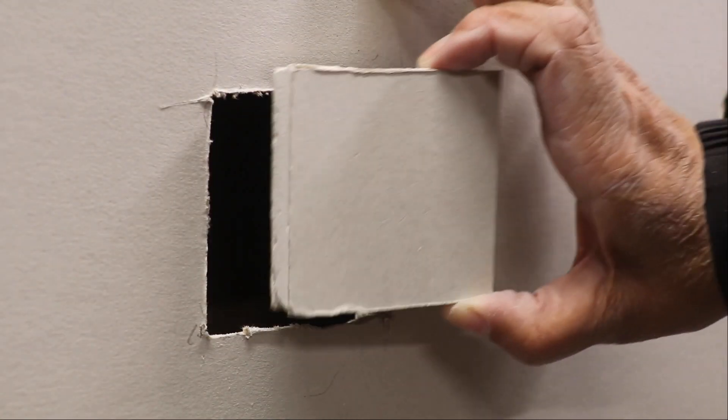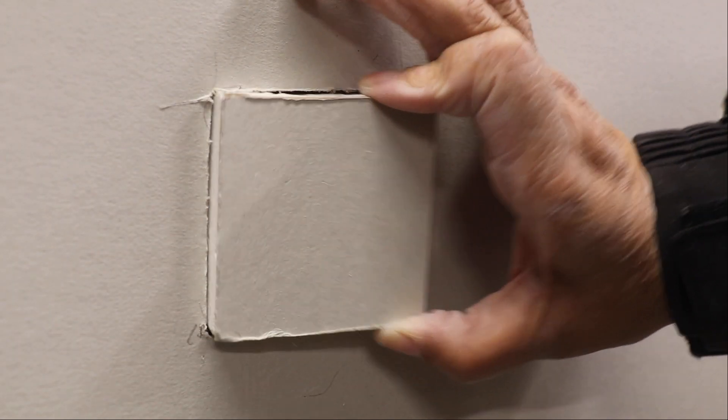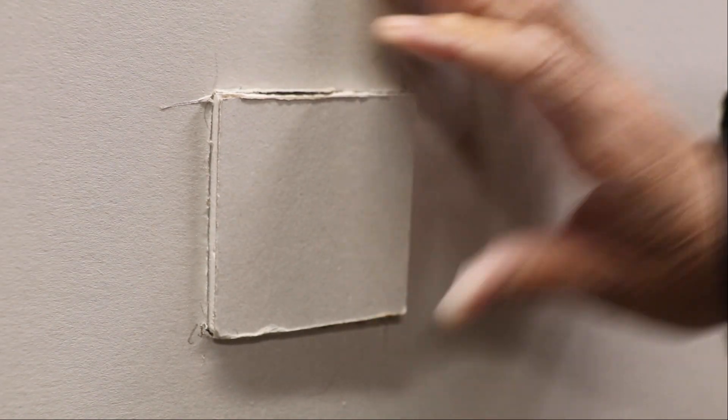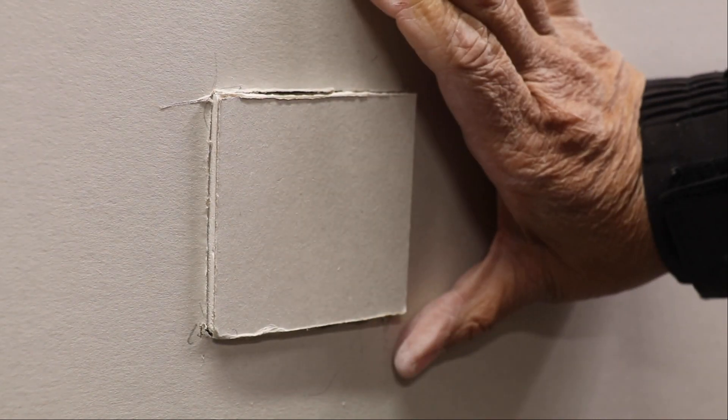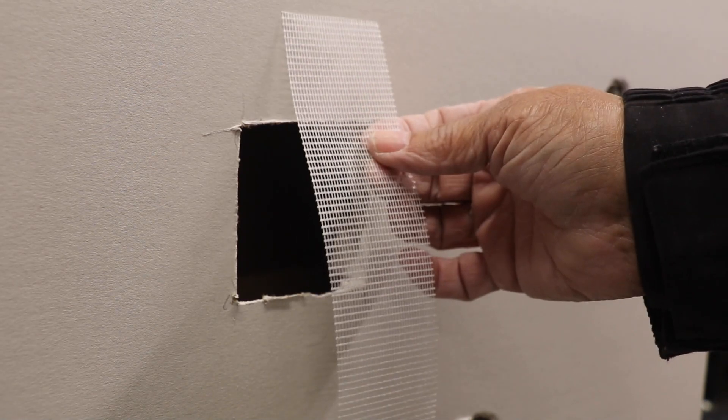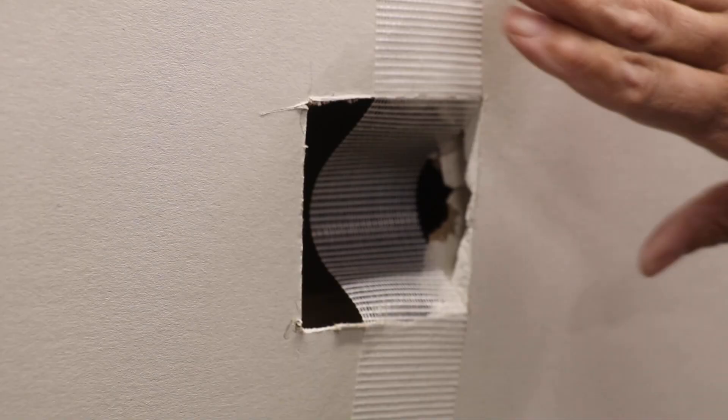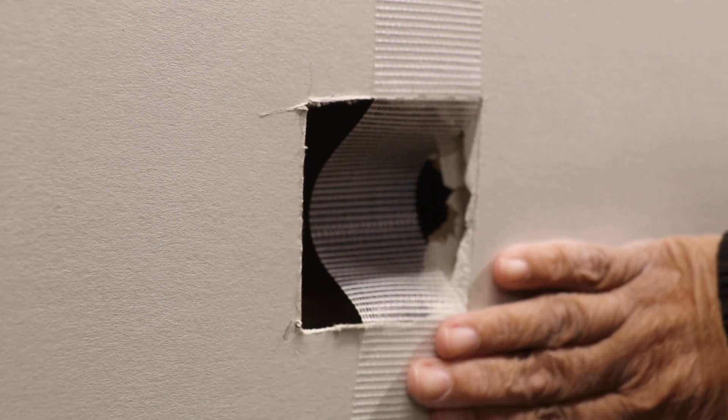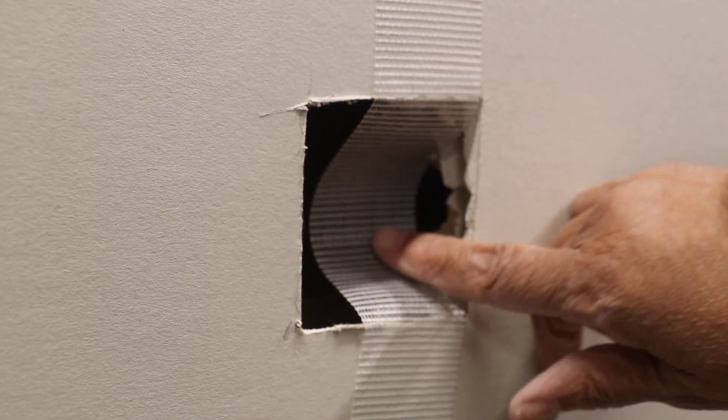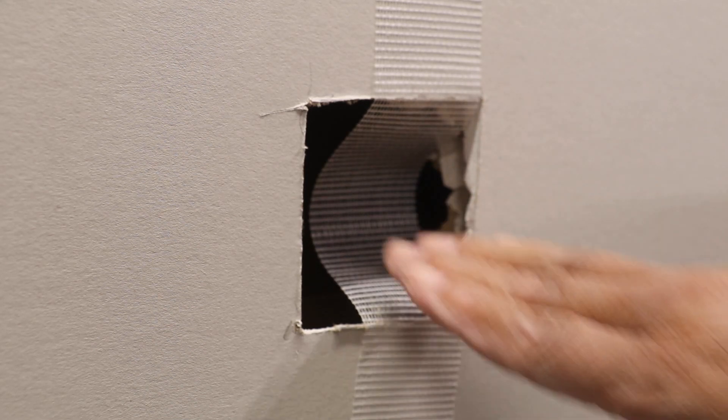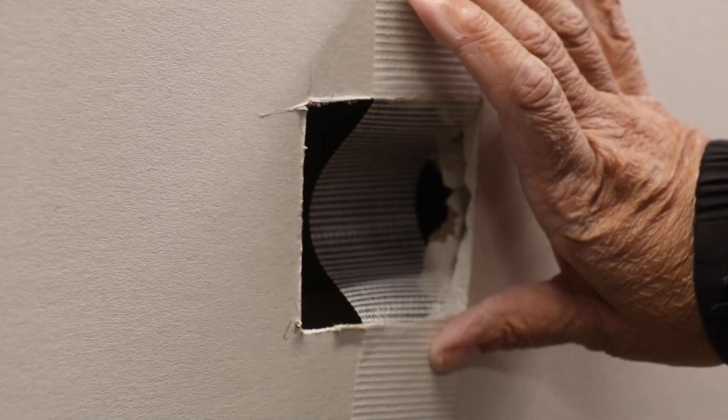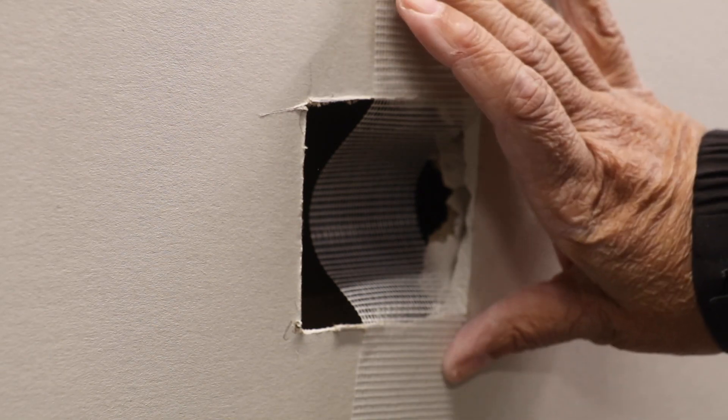Now once you've got your area cut out, you'll want to do a dry fit just to make certain that your patch is going to fit snugly. Next we take our fiber tape and we're going to put it here and fold it back. You want your fiber tape to look something like this where you've got a band sitting inside the cavity and that's what's going to hold our drywall patch in place.